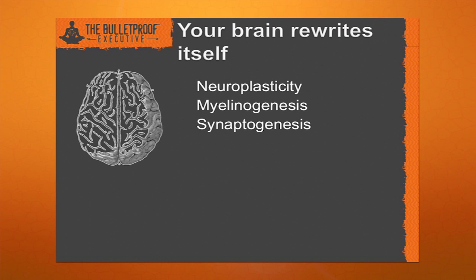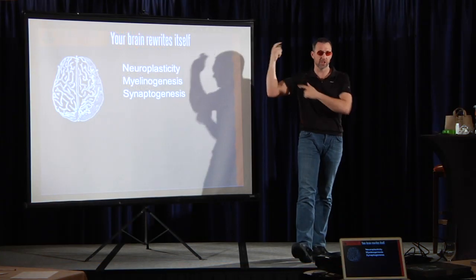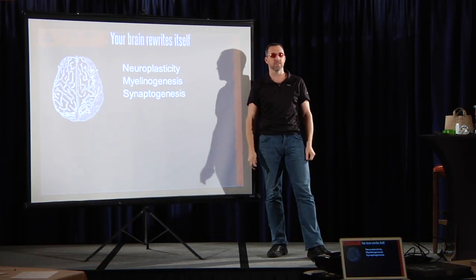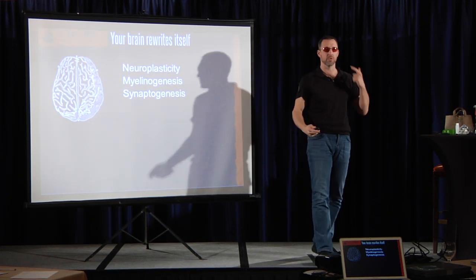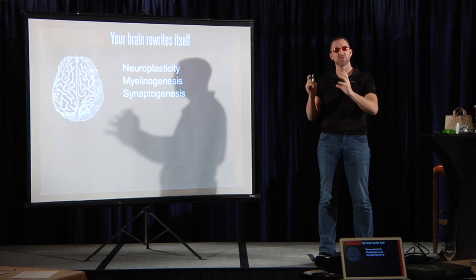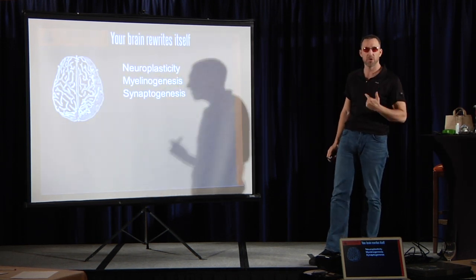There's something called myelinogenesis. When you put insulation around specific nerves, called myelin, they conduct electricity 3,000 times faster than unmyelinated nerves. The way you put myelin around your nerves is you practice something. Practice makes myelin. So does eating a lot of fat, which is what myelin is made out of. We have MRI studies showing that you change the physical structure of your brain as you do things.